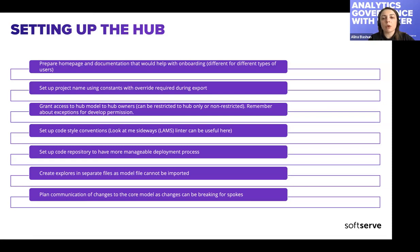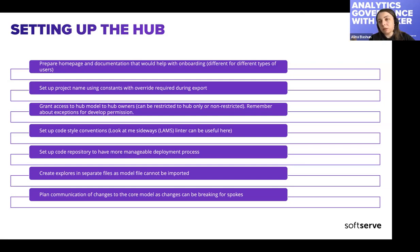Access can be restricted so that hub owners can see only hub models, or non-restricted so they can see explorers and data in different spoke projects. You would need to set up code style conventions, because the hub should be an iconic, reusable environment — it should not look like a mess. You may want to use additional tools to improve continuous integration and do styling checks automatically. You'd need to set up a code repository for a more manageable deployment process, and maybe set up a team with permission to merge pull requests.